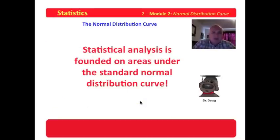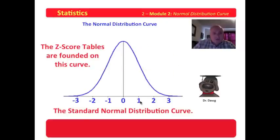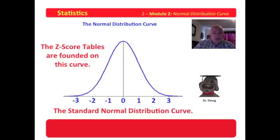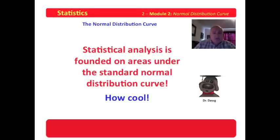Statistical analysis is founded on areas under the standard normal distribution curve — that curve is very, very important to us. It represents distributions that will guide us in our journey through statistics, and all of that is founded on the normal distribution curve. Some folks say the only real important things in statistics are the mean and the standard deviation, but those can be used to define the standard normal distribution curve, and our z-scores will help us find areas under the curve. That's really way cool.